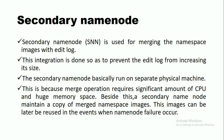The Secondary NameNode is used for merging the namespace image with the edit log. This integration is done to prevent the edit log from increasing in size. The Secondary NameNode runs on a separate physical machine because the merge operation requires significant CPU and memory. It also maintains a copy of the merged namespace image, which can be reused in the event of a NameNode failure.